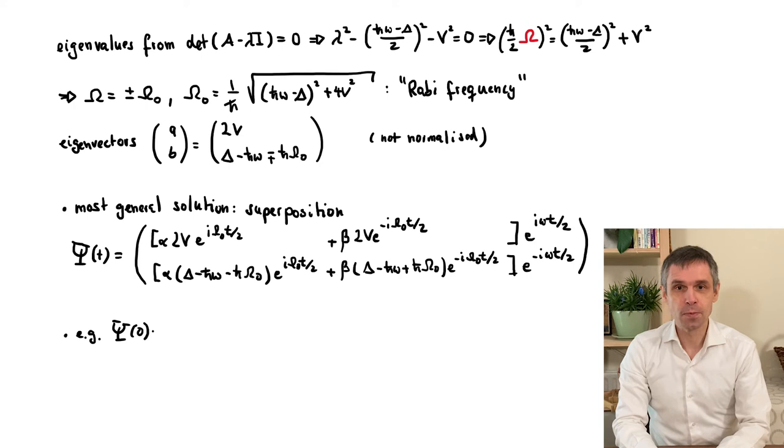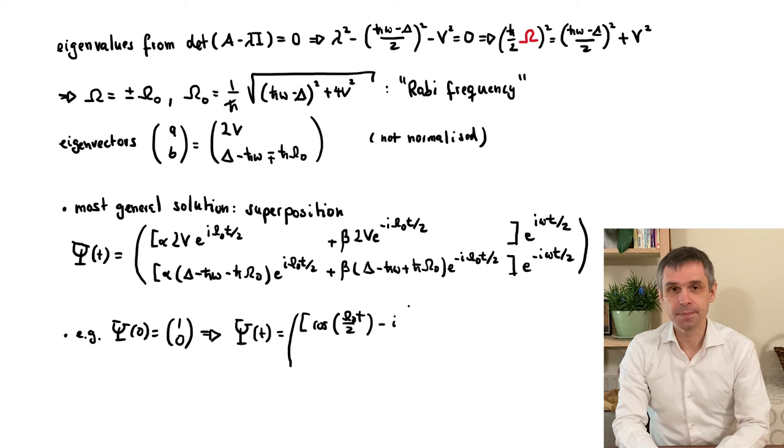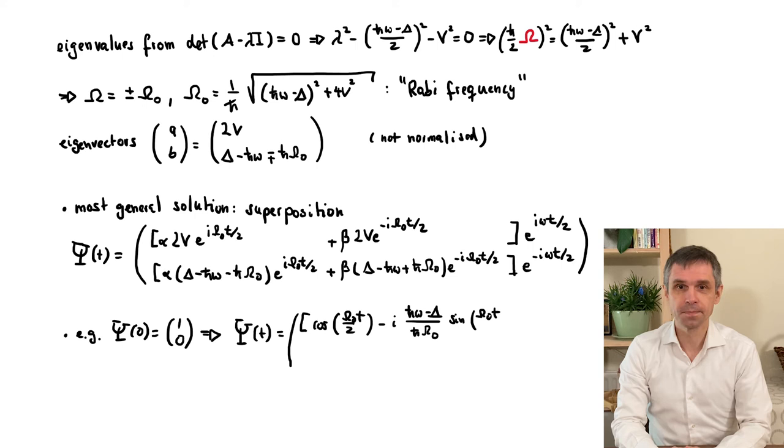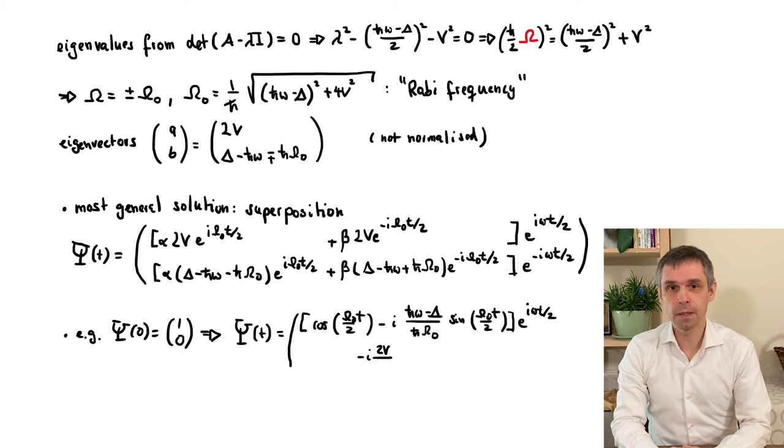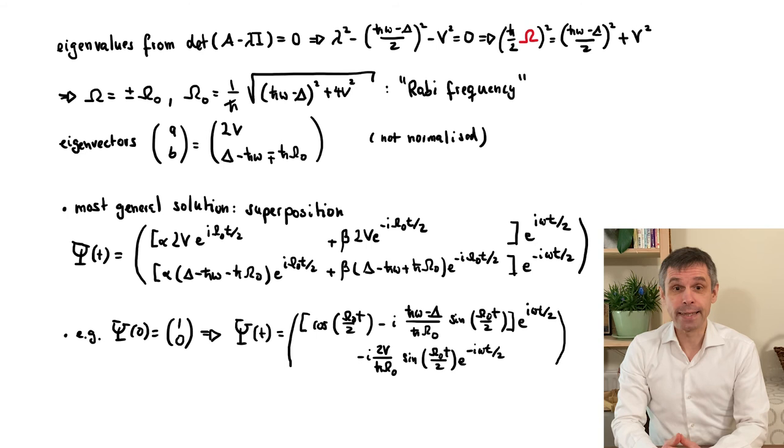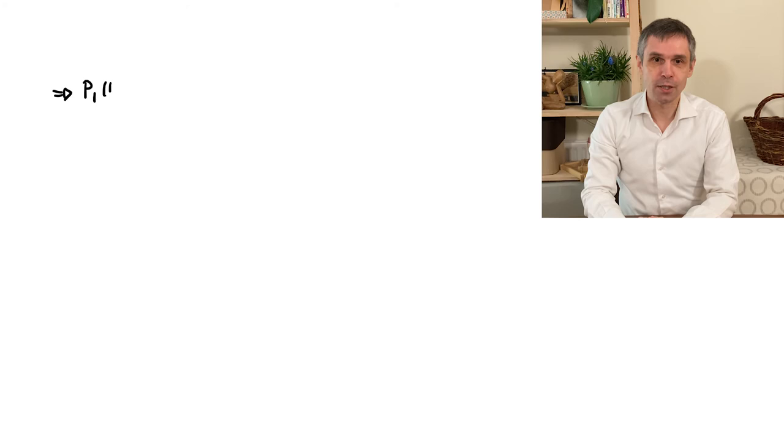So far with the general solution. Let us then look at one specific initial condition, where the spin is initially in the state spin up. This is an eigenstate of the static part of the Hamiltonian, and so without the driving, the spin would simply remain in this state. Well, including the driving, we find the solution given here. This just corresponds to certain values of alpha and beta, where we initially have the state 1, 0. And what we see now is that at later times, the lower component becomes finite. So we now have in general finite probabilities to be in each of the two basis states. These probabilities are just the absolute value squared of the two components, and take a really simple form as given here.